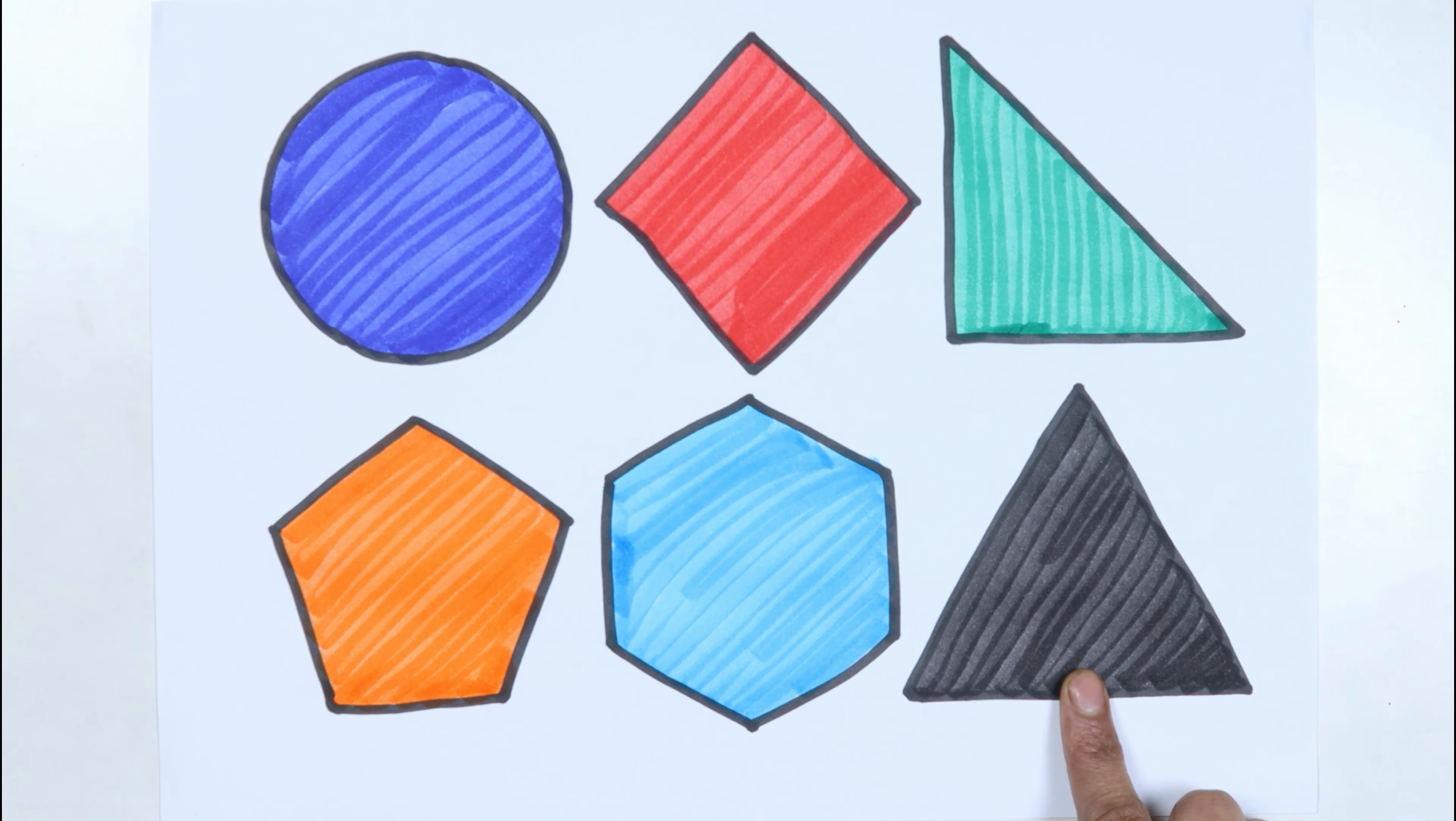Triangle. Circle, rhombus, right triangle, pentagon, hexagon, triangle.